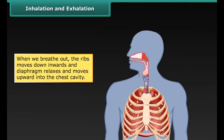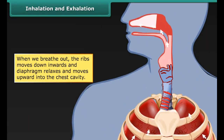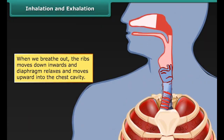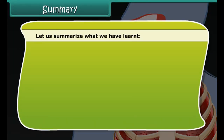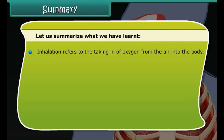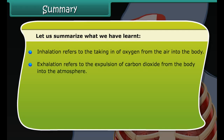When we breathe out or exhale, our ribs move down and inwards and our diaphragm relaxes and moves upward into the chest cavity. As the space in the chest cavity gets smaller, air rich in carbon dioxide is forced out of our lungs and windpipe, and then out of our nose or mouth.